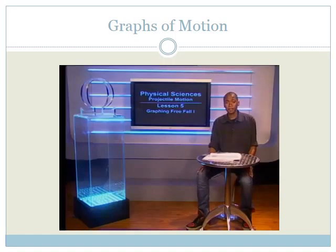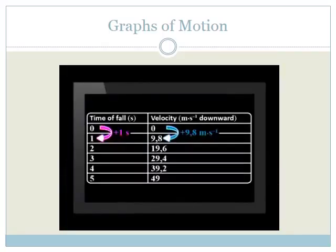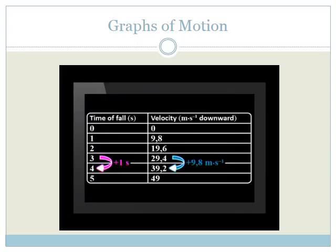Hello, Matrix. Welcome to this lesson on graphs and freefall. Let's start by drawing velocity time, acceleration time, and position time graphs for a ball in freefall moving downwards. The velocity of the ball increases by 9.8 meters per second downward each second.